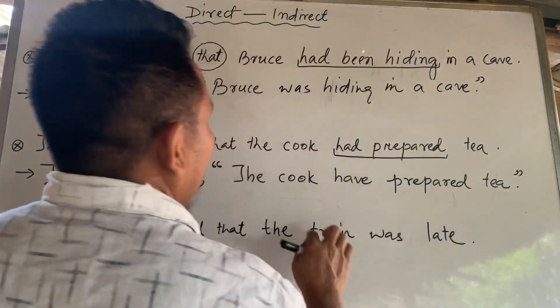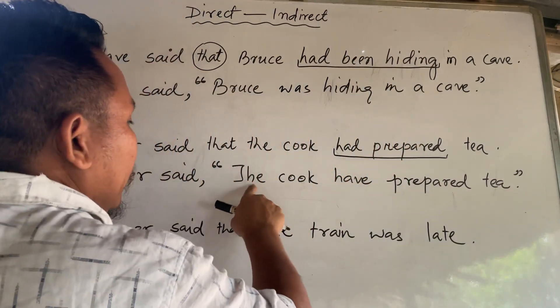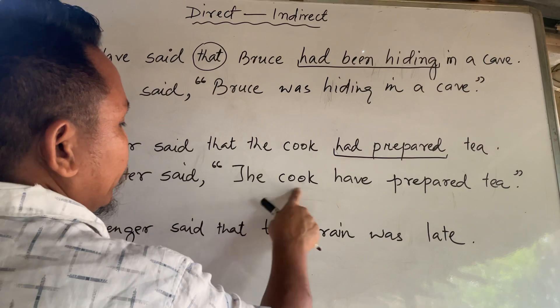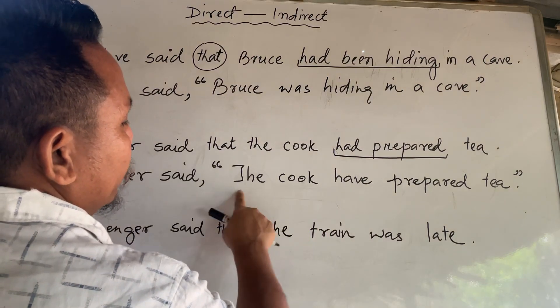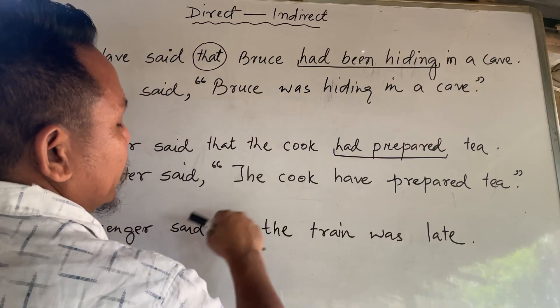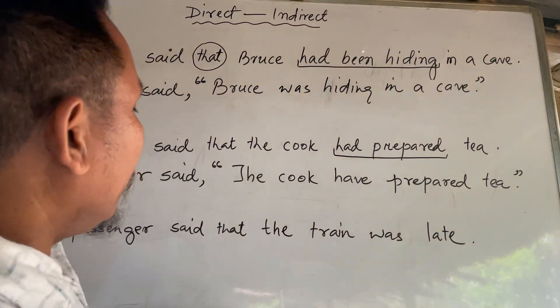Crip, pear, tea. Yaqub. Yaqub — third person singular, number is plural.